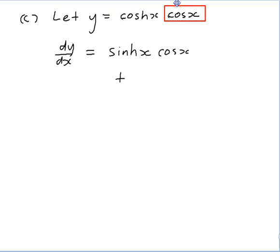Plus the first one not differentiated, cosh x, times the derivative of the second, which is -sin x.